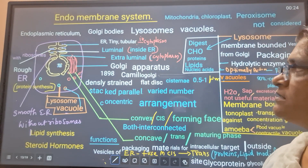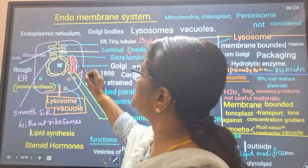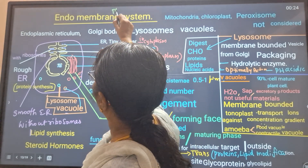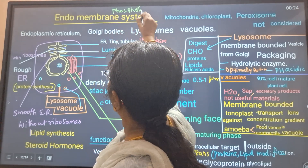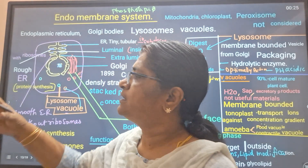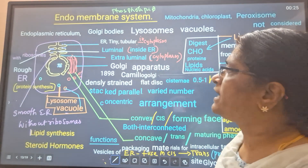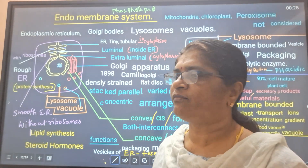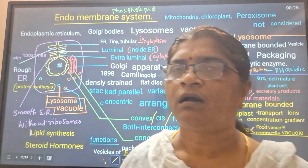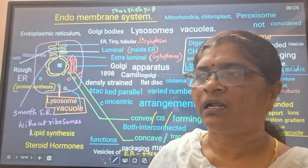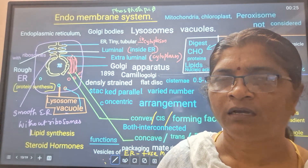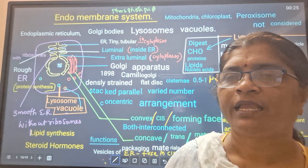So endomembrane system is a system of phospholipid bilayer membranes. These membranes form some organelles that are together - physiologically together. From a functional point of view, their functions are interconnected with each other, with the last product passing on. Such a system of assembly of cell organelle structures is the endomembrane system.